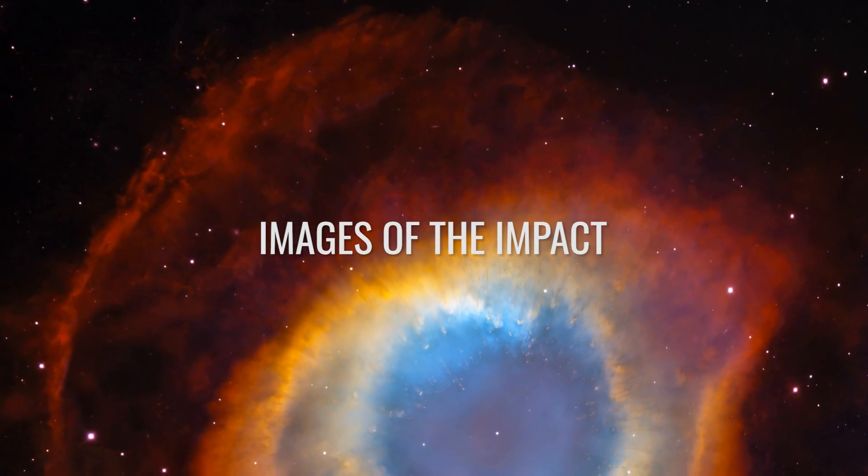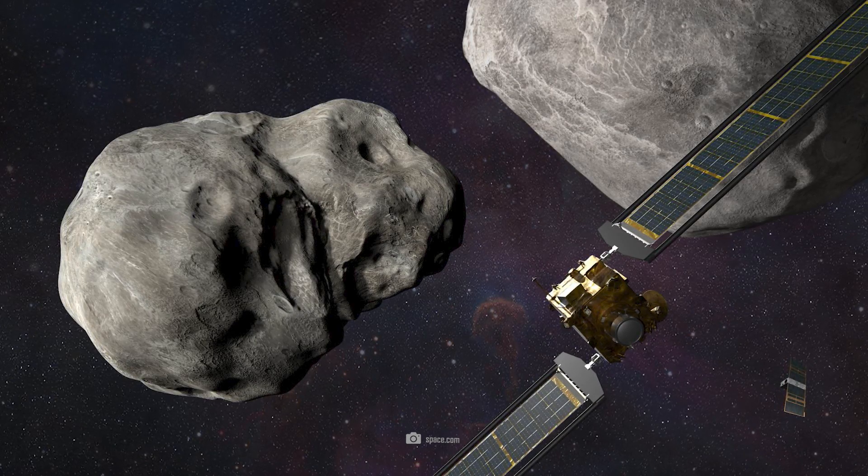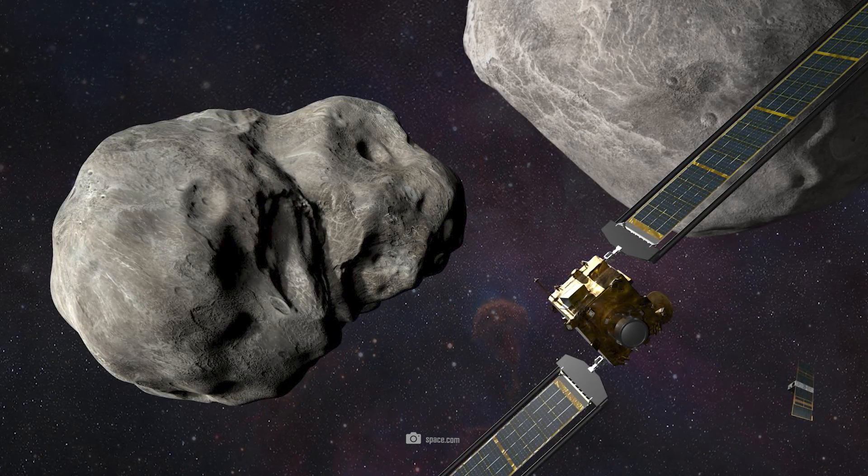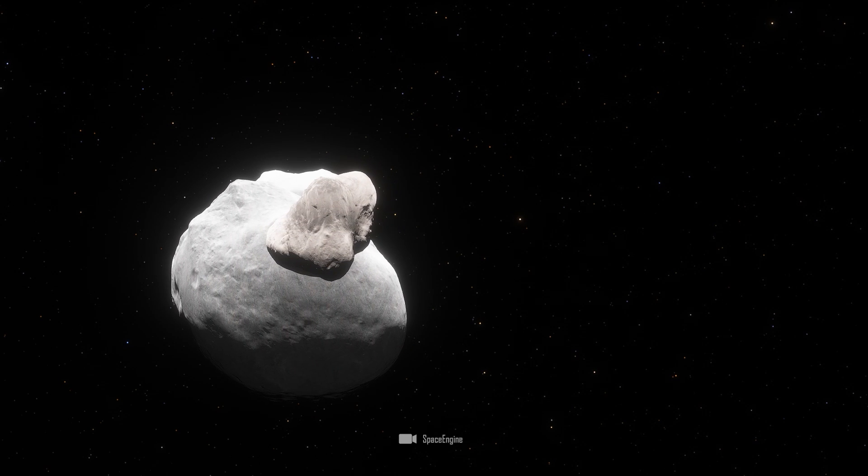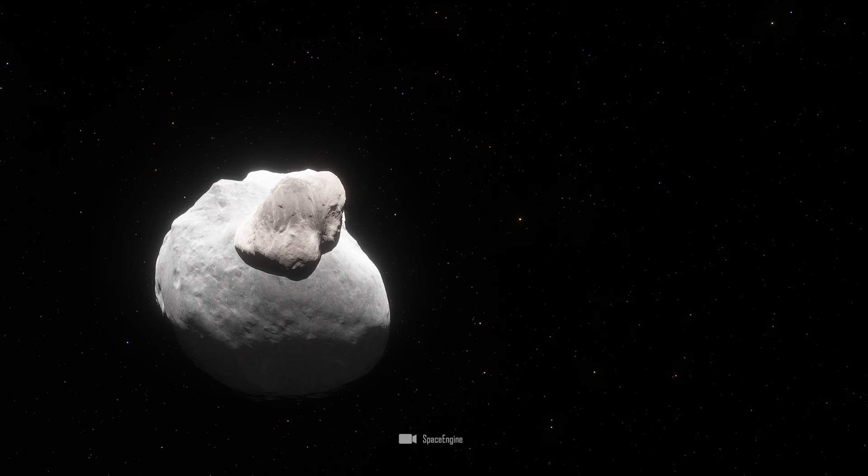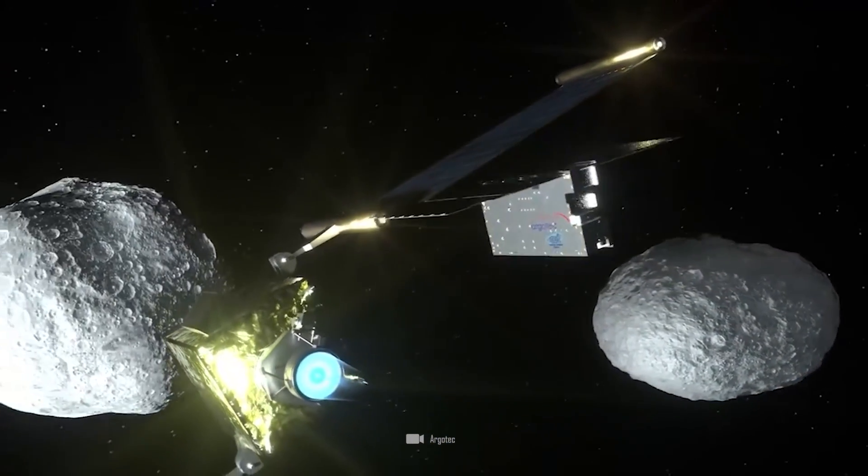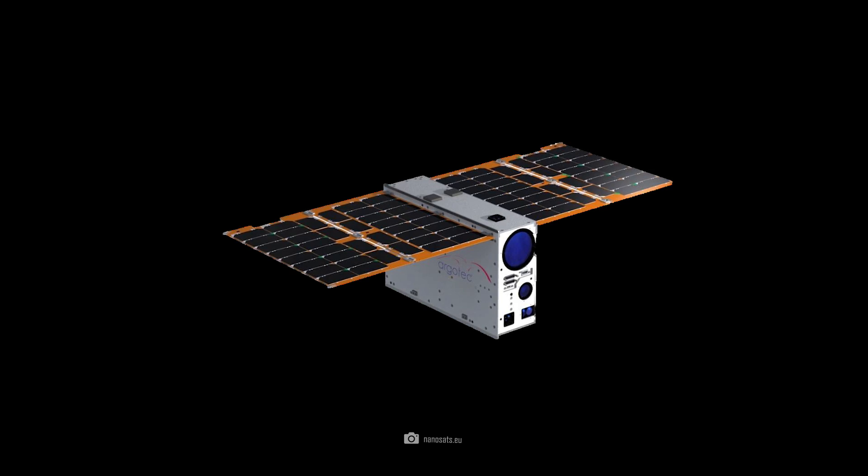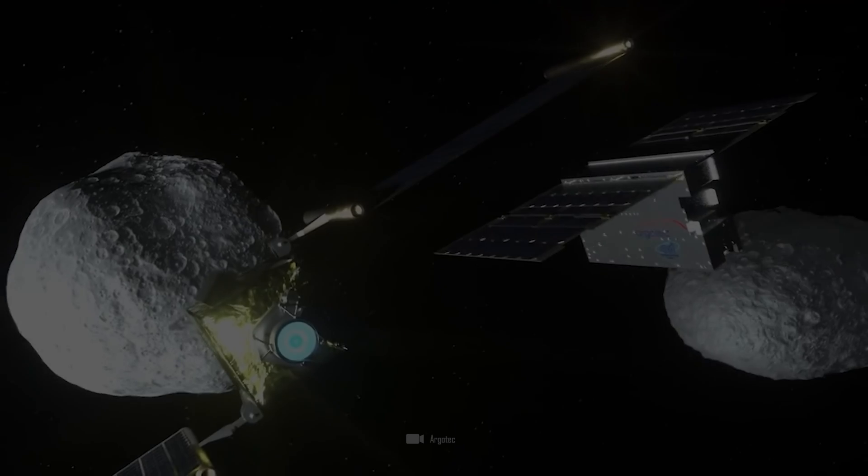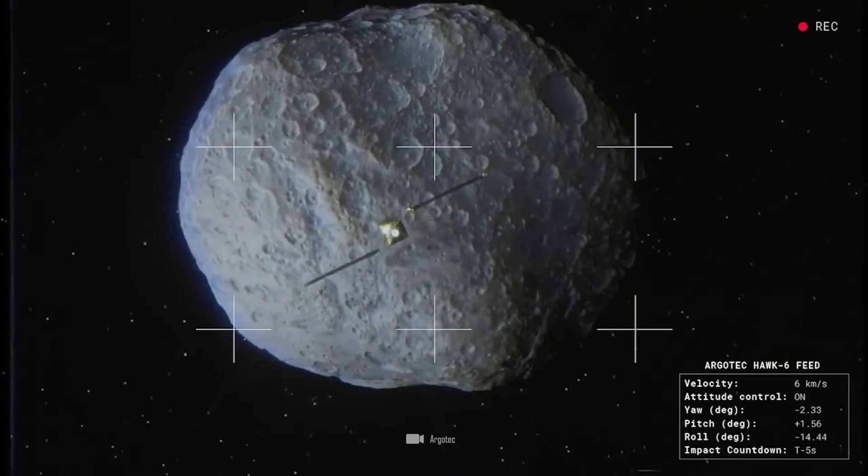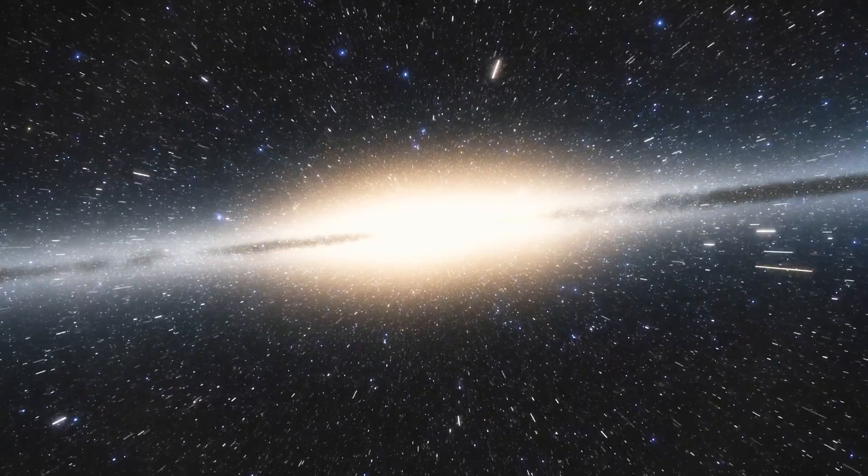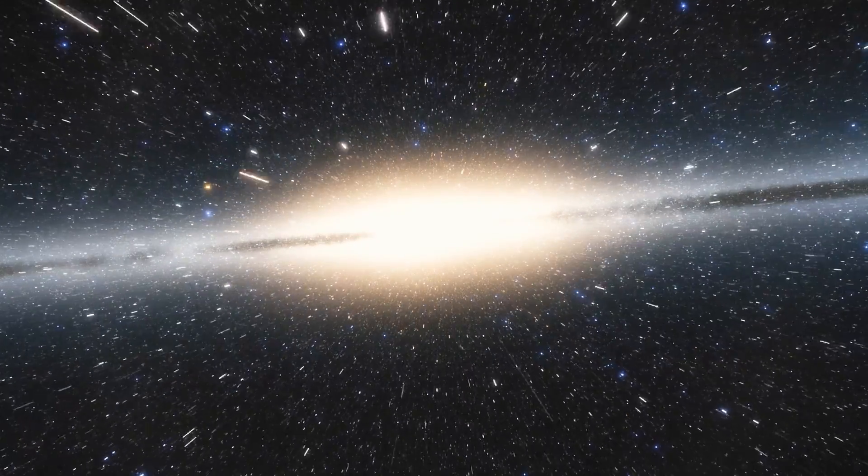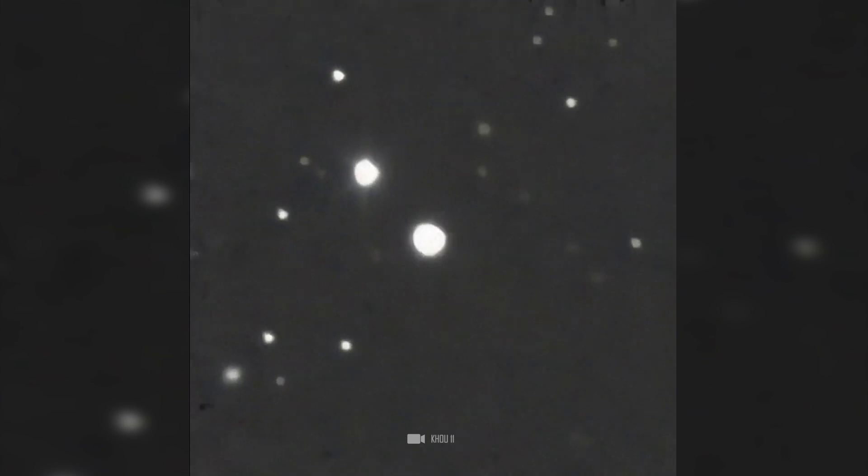Images of the impact. Of course, DART was not supposed to just hit the surface and then disappear forever. To observe the impact as well as possible, the Italian Space Agency contributed its own probe to this important experiment. The Italian CubeSat for imaging of asteroids, or LiciaCube for short, followed DART at a distance of just a few kilometers. From a distance of just under 57 kilometers, the satellite provided stunning images of the impact. The images, published by the Italian Space Agency, Agenzia Spaziale Italiana or ASI, a few hours after the impact, show Dimorphos before and after the impact.